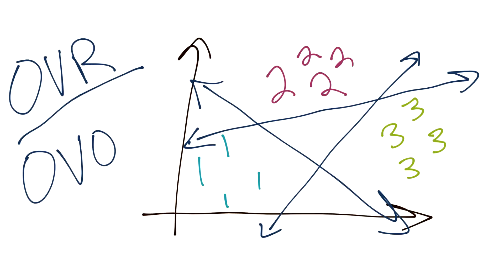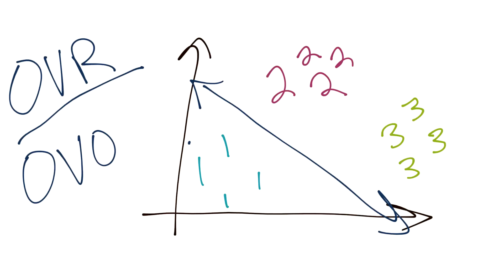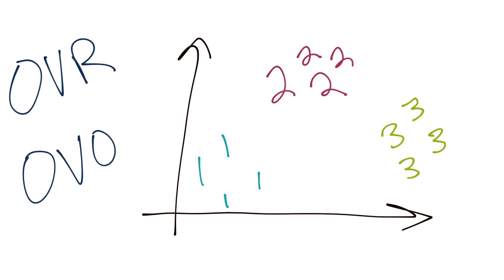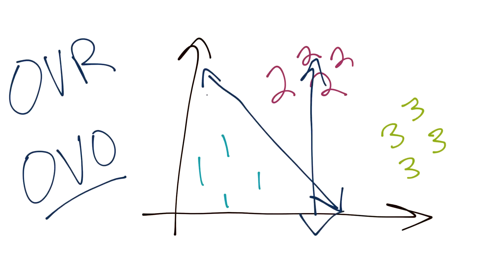One versus rest is generally the default you'll use, but let's cover one versus one. With OVO, there is a separating hyperplane between each pair of groups: ones versus twos, ones versus threes, twos versus threes. Each unique pair gets its own hyperplane, but since pairs are shared — threes versus ones is the same as ones versus threes — you don't need to recompute them.